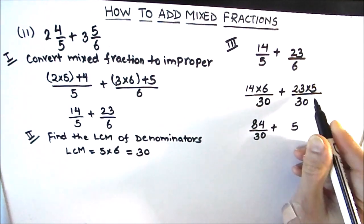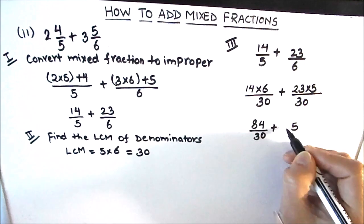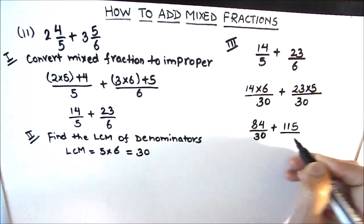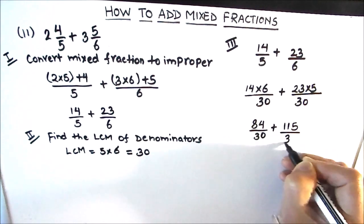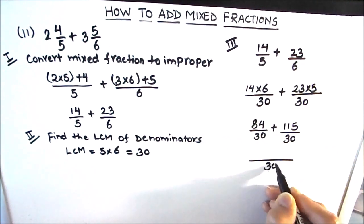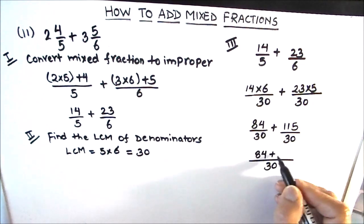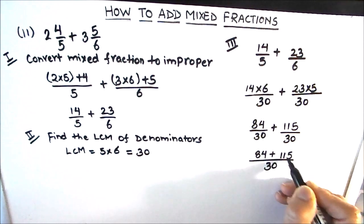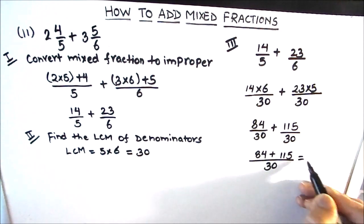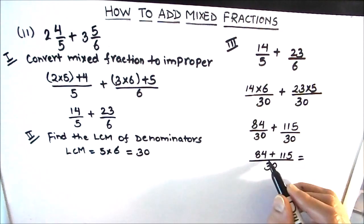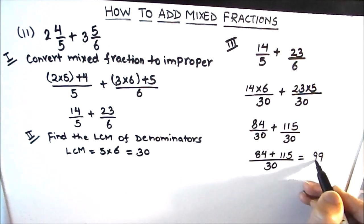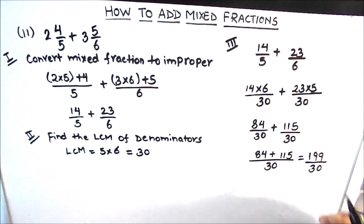14 × 6 = 84, giving us 84/30. 23 × 5: 5 × 3 = 15, carry 1; 5 × 2 = 10, plus 1 = 11; so 115/30. As both denominators are equal, the numerators get added: 84 + 115. 4 + 5 = 9, 8 + 1 = 9, giving us 199/30.